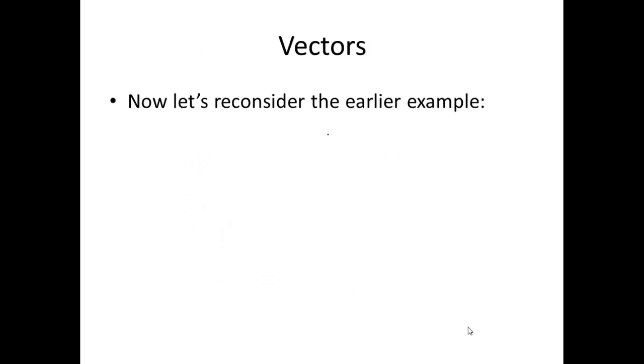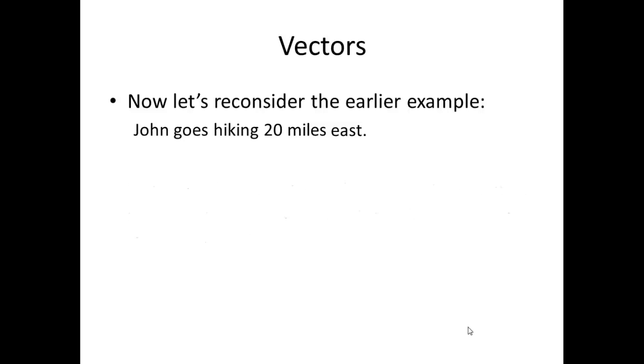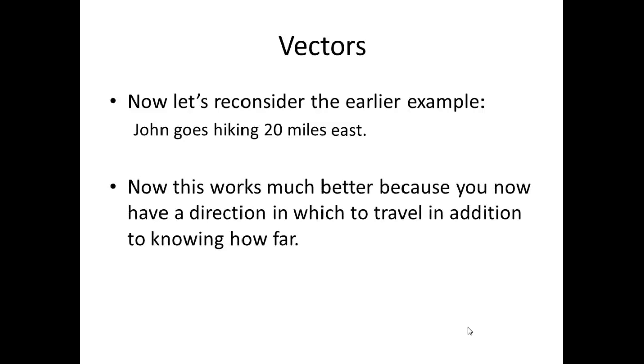Now let's consider the earlier example. Say John goes hiking 20 miles. Now if you add the word east, that now you have a vector quantity and it works better because now you could figure out where on the circle he's going to be. Because you know where to go to look. However, there's still a problem. Can you see what it is?